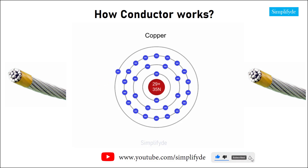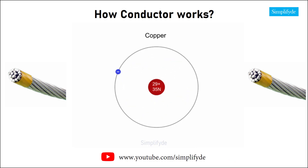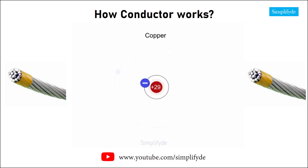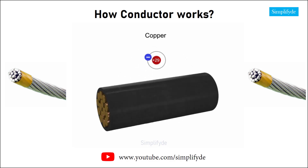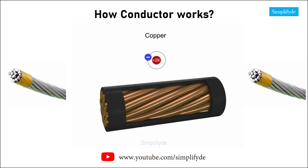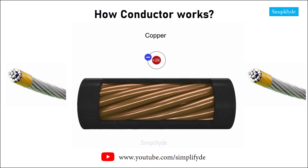Let's take a more detailed look at how these free electrons flow when a voltage is applied across a copper wire. Taking a simplified version of a copper atom with its single valence electron, let's distribute copper atoms along the length of a copper wire.